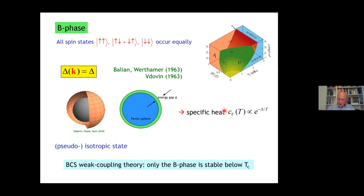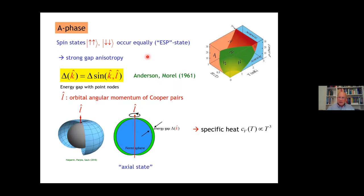But then we know there is another phase, the A phase up here. In the A phase, the middle component is missing. We are only dealing with the spin state up-up and down-down. These are called equal spin pairing states. That gives rise to a strong gap anisotropy, as first found by Anderson and Morel in 1961. The energy gap has point nodes at the north and the south pole. The direction L is named precisely the orbital angular momentum of a Cooper pair. It's called the axial state because of the existence of this axis.